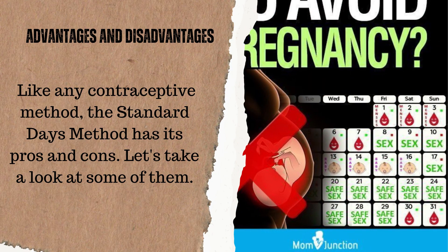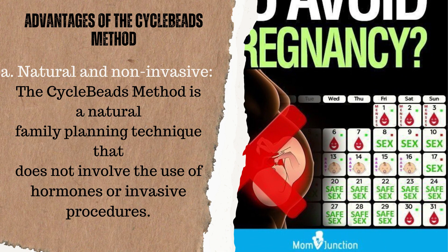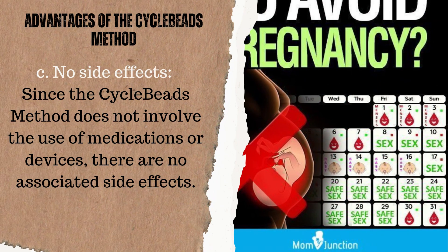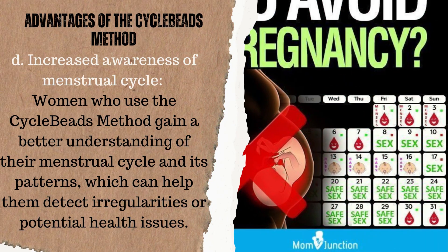Advantages and disadvantages: Like any contraceptive method, the standard days method has its pros and cons. Advantages include: it is natural and non-invasive, not involving the use of hormones or invasive procedures. It is cost-effective — once the cycle beads are acquired, there are no ongoing costs, making it an affordable option. There are no side effects since the method does not involve medications or devices.